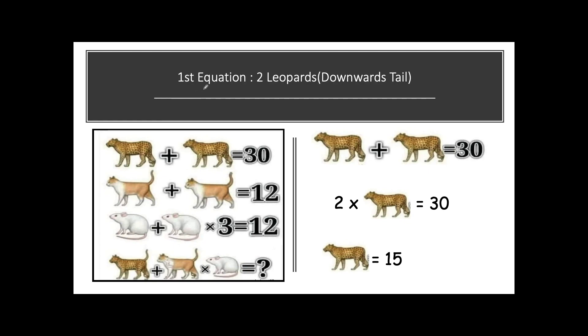Solving our first equation: it has got two Leopards whose sum is equal to 30. So the equation is 2 × Leopard = 30, meaning one Leopard value is equal to 15.